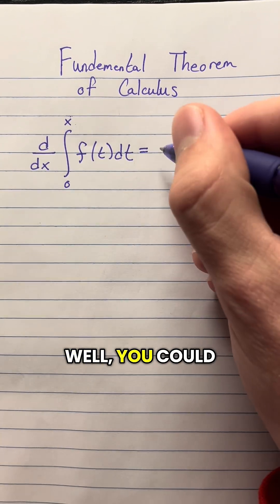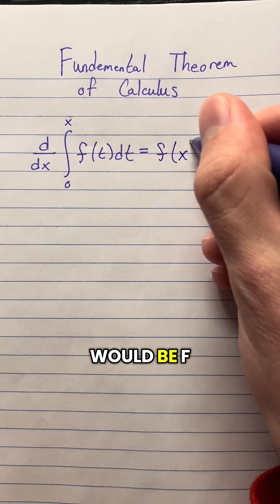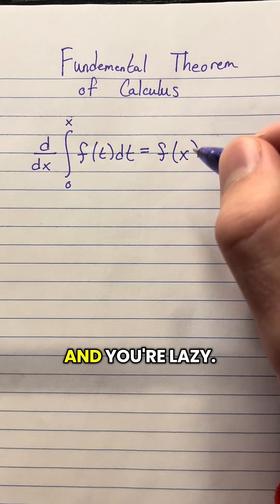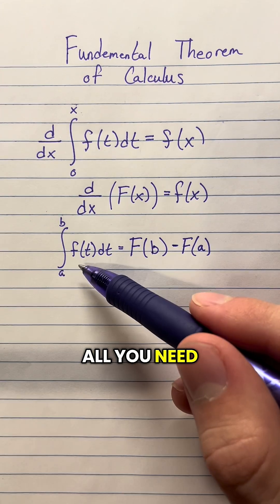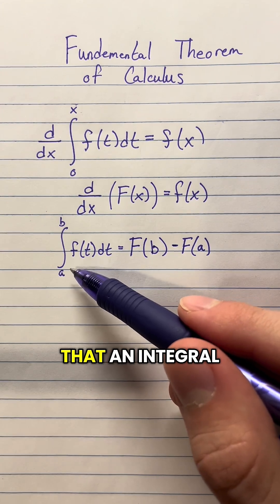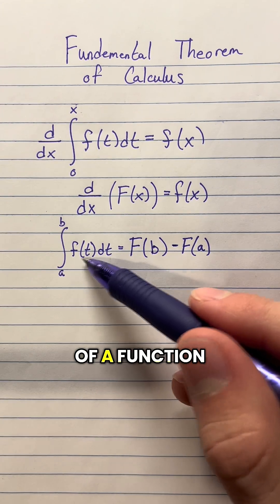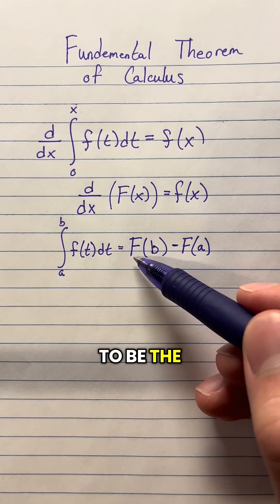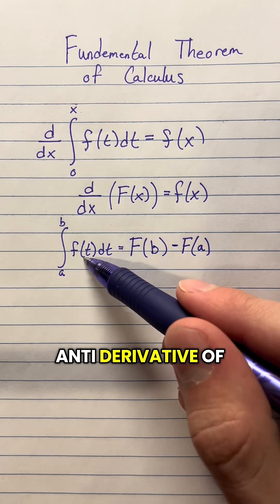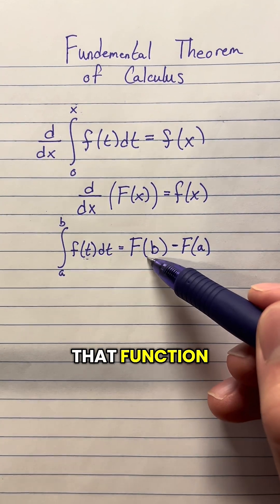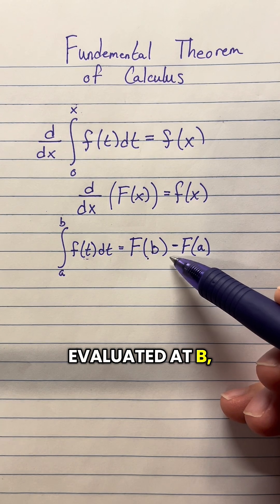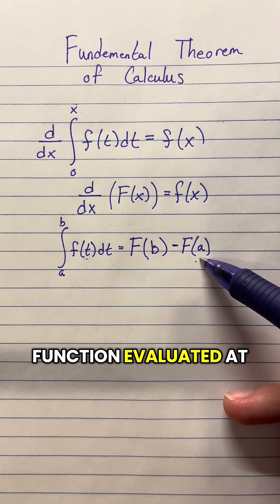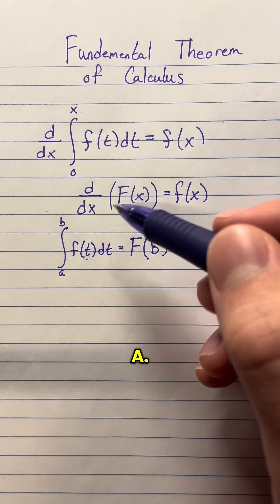Well, you could just memorize the fact that it would be f of x. However, I know you and you're lazy. All you need to remember is that an integral of a function from a to b is just going to be the antiderivative of that function evaluated at b, minus the antiderivative of that function evaluated at a.